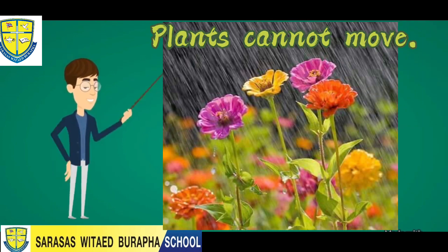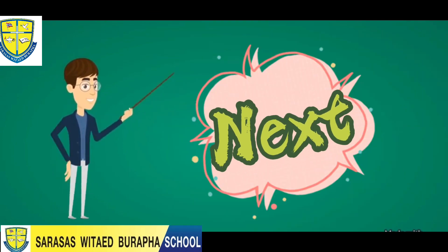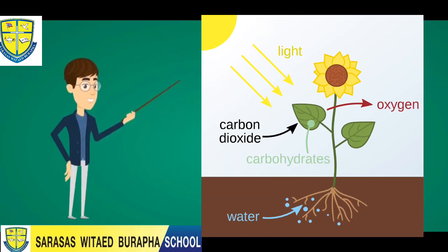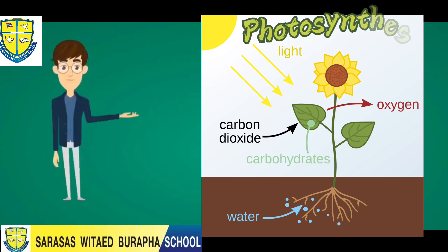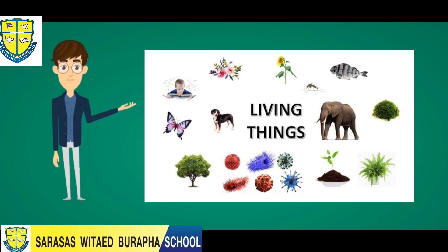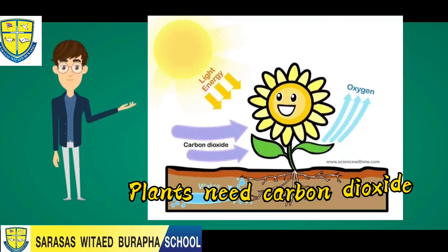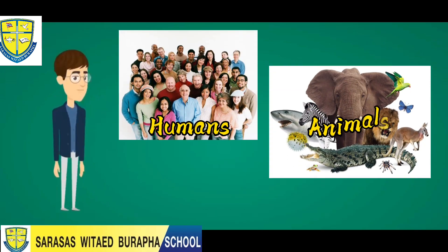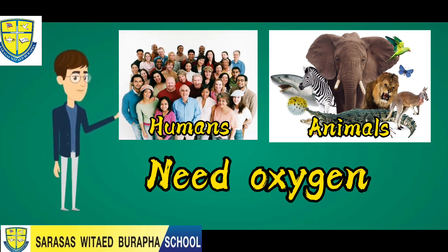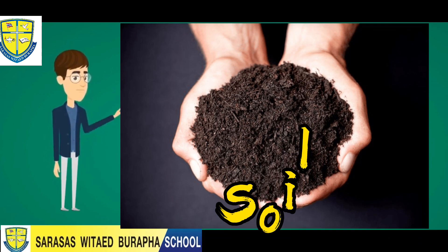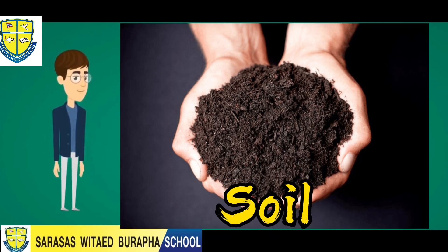Next is air. Plants need air, especially in making their own food. But unlike other living things, plants need carbon dioxide, while humans and animals need oxygen.